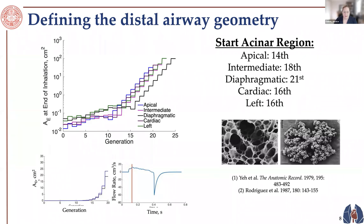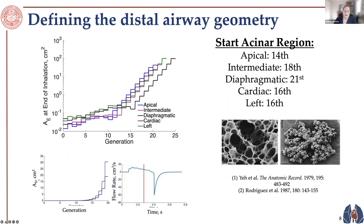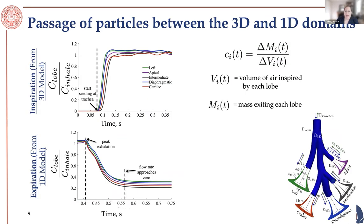For example, the apical lobe — the top right lobe in the rat — starts at a much earlier generation in the acinar region than the diaphragmatic lobe, which has consequences for deposition. When we pass particles between the 3D and 1D domains, the description changes: in the 3D domain we track each individual particle, while in the 1D domain we look at concentration of particles. This animation shows particles throughout the 3D domain during inhalation, becoming uniformly concentrated, then during exhalation being returned until flow rate approaches zero.